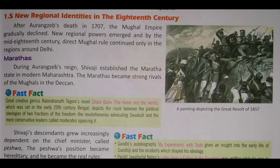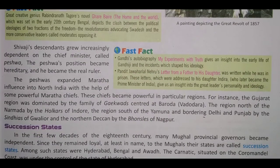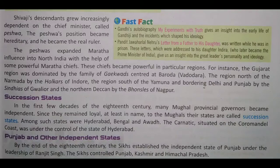Marathas became a strong rival of the Mughals in the Deccan region. The Maratha became the most powerful contender against the Mughals in the Deccan. Shivaji's descendants became increasingly dependent on the chief minister called the Peshwa. The Peshwa's position became hereditary and they became the real rulers.